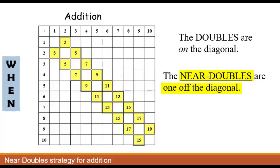In the addition table, the double facts are on the main diagonal. For example, right here would be three plus three. Right here would be nine plus nine. The near double facts are one off the diagonal. Here's two plus three is five, here's three plus four is seven, and so on.